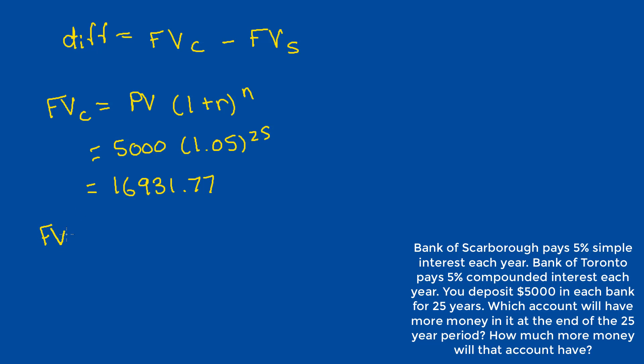For the future value of the simple interest account, we would have to use the expression present value plus present value times the rate times the number of periods. So, again, here we just plug in 5,000 plus 5,000 times 0.05 times 25, and that should give us $11,250.